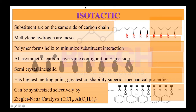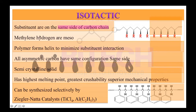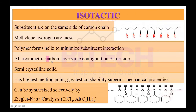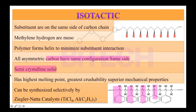To summarize isotactic polymers: the substituents are always lying on the same side of the carbon chain. The methylene groups make it meso, which minimizes substituent interactions, and all the asymmetric carbons have the same configuration. These are semi-crystalline solids with very high melting points.